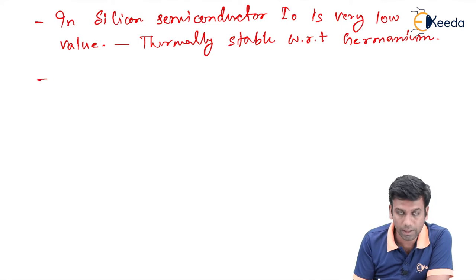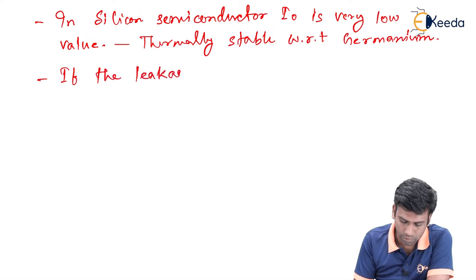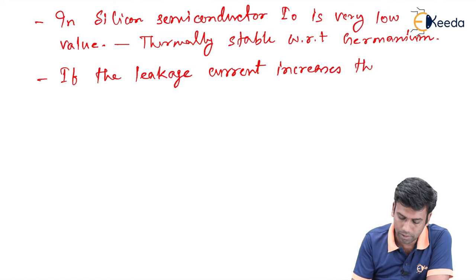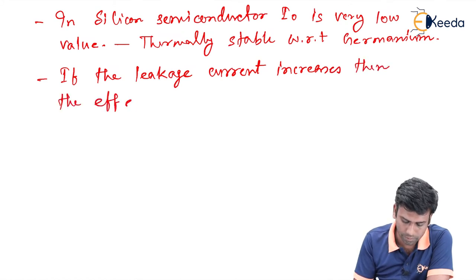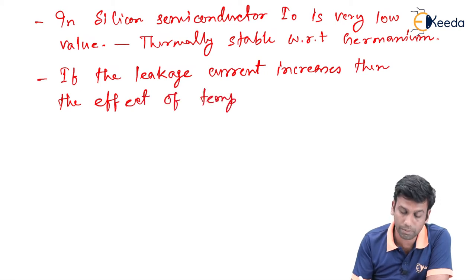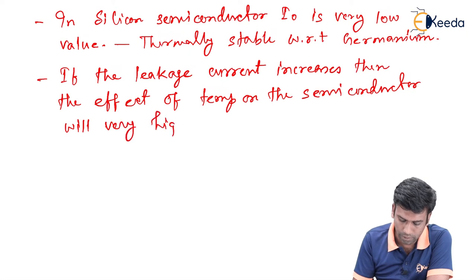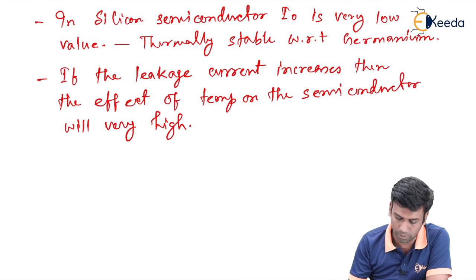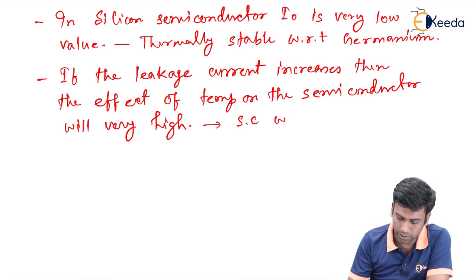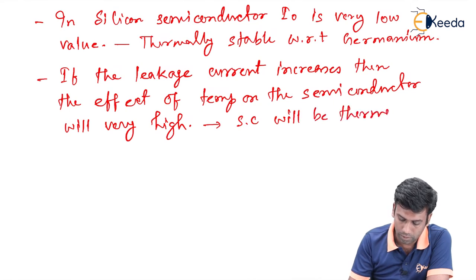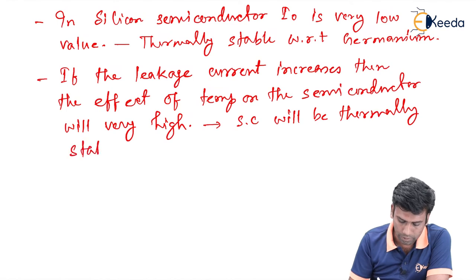Now, if the leakage current increases, then the effect of temperature on the semiconductor will be very high. Then the semiconductor becomes thermally unstable. So semiconductor will be thermally unstable.